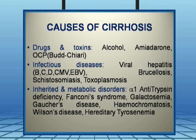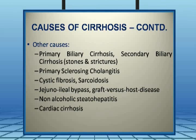Further causes of cirrhosis include primary biliary cirrhosis, secondary biliary cirrhosis which occurs due to the two S's — stones and strictures — primary sclerosing cholangitis, cystic fibrosis, sarcoidosis, and uncommonly jejunoileal bypass surgeries and graft-versus-host disease. Non-alcoholic steatohepatitis, or NASH, is on the rise because of obesity globally. We also have cardiac cirrhosis.